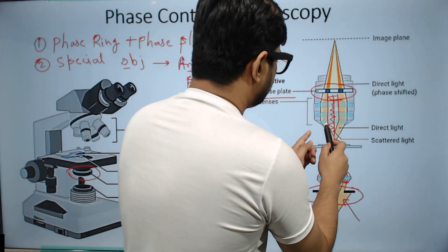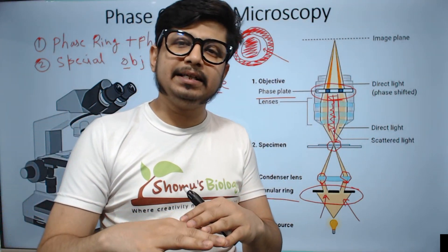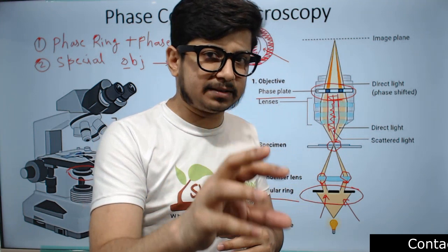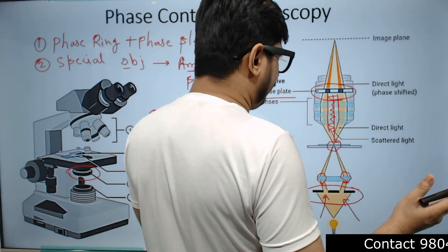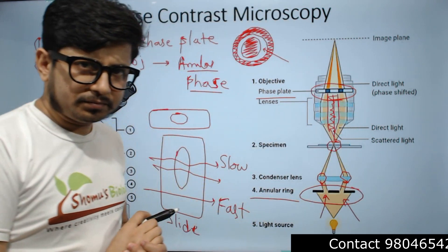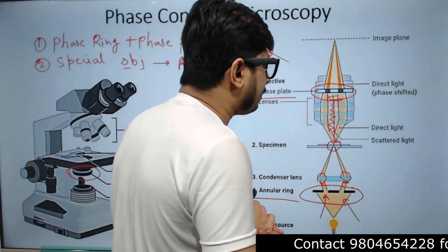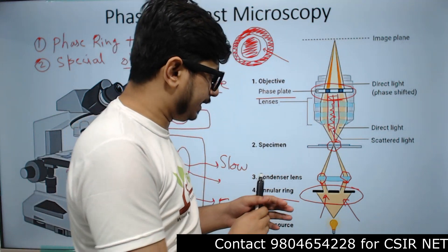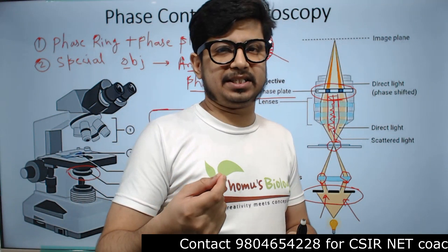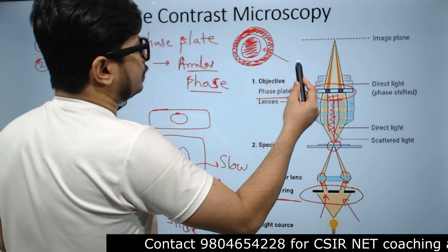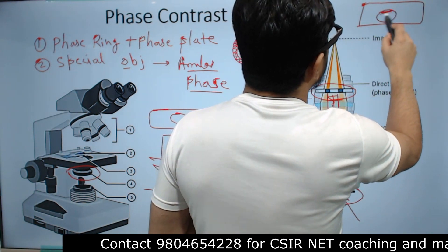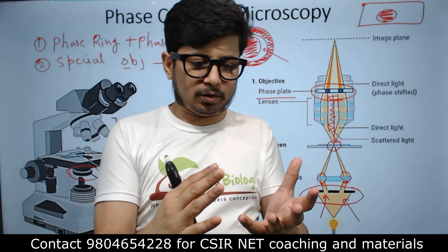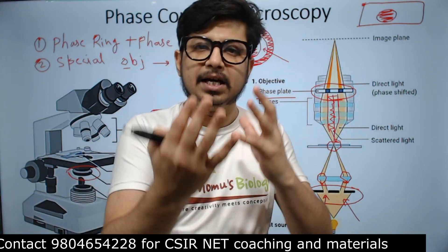The light passing through the periphery via the objective comes from the background with no scattering, while the light coming from the center of the specimen is scattered light. So there are two kinds of light: direct light at the periphery and scattered light from the center. As I mentioned, the light wave moves slowly through the specimen and faster through the background, causing a phase shift. Using the annular ring alone we can create some contrast — a dark background and a lighter specimen — but it provides only a little more contrast than the existing specimen.